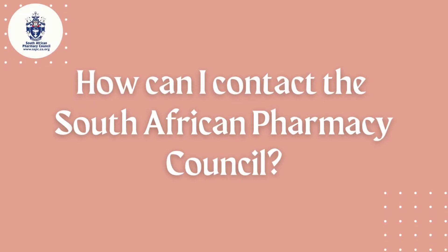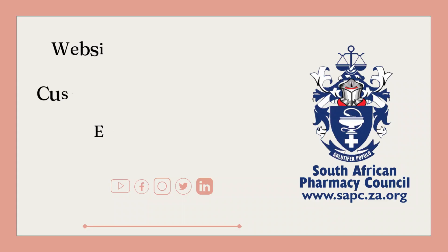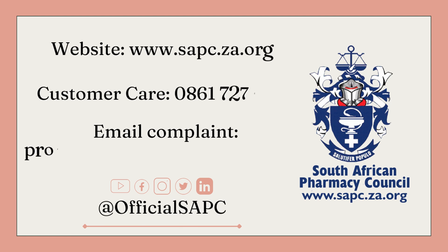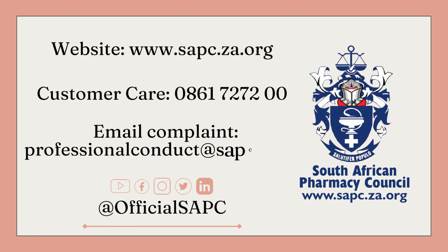You can get in touch with us by visiting our website at www.sapc.za.org, or give us a call on our customer care line on 0861-7272-00. If you want to lodge a complaint, you can send an email to professionalconduct@sapc.za.org, or interact with us on social media at officialSAPC.